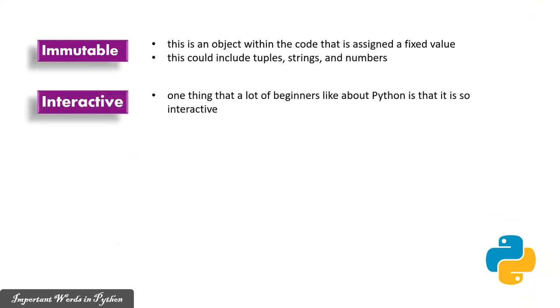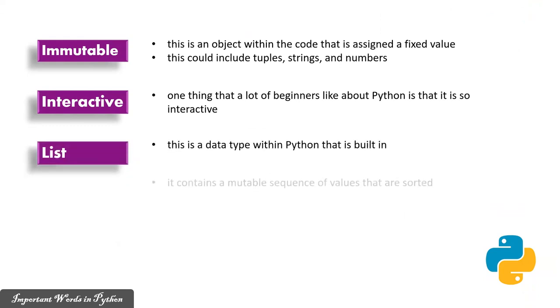Interactive: One thing a lot of beginners like about Python is that it is so interactive. List: This is a data type within Python that is built in. It contains a mutable sequence of values that are sorted.